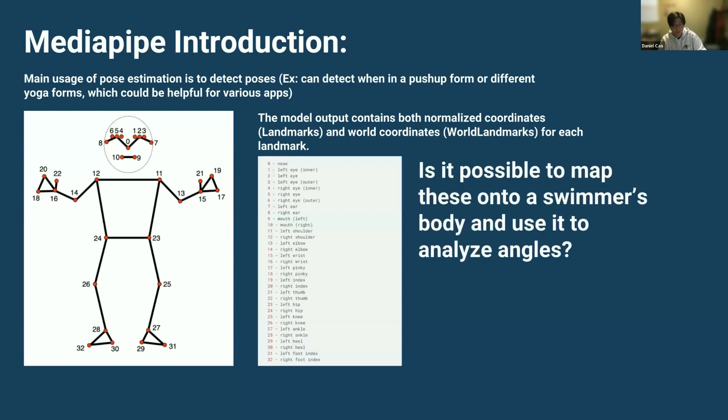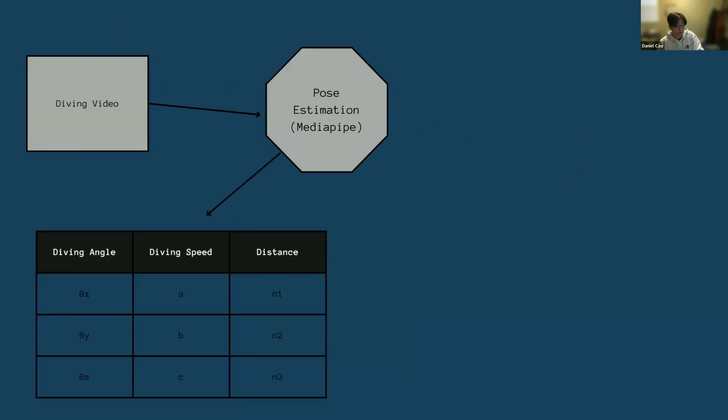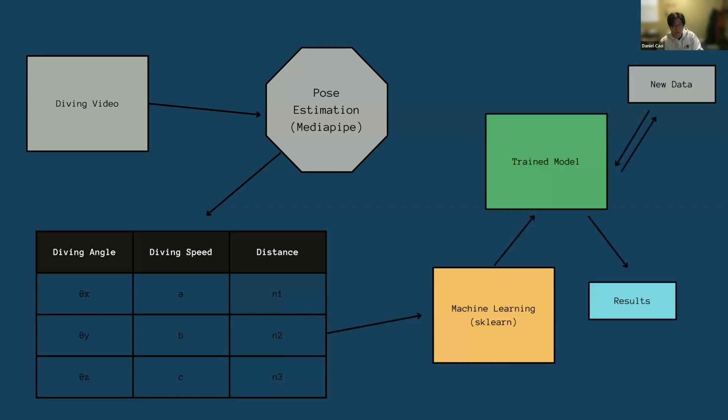But this brings up the question, is it possible to even map these onto a swimmer's body and use it to analyze angles? And if it's possible, how do we do it? Well, it turns out we can. And here's the plan in simple steps. We take a video of the dive itself, feed it into MediaPipe, obtain all the data from it, which are the diving angles, diving speeds, and distance, which will all be calculated using the key points. And feed it into a machine learning program, which will then be used for a trained model, which is fed more new data and it turns into results.